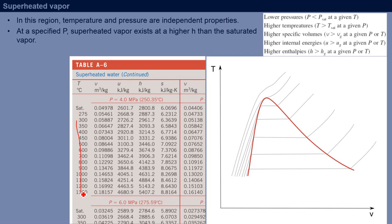And then we can read what are our properties like specific volume, internal energy, and enthalpy. Unlike the saturated tables, you can see there is only one value for each property.